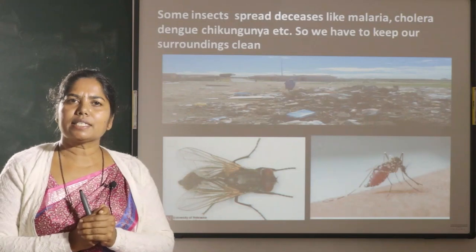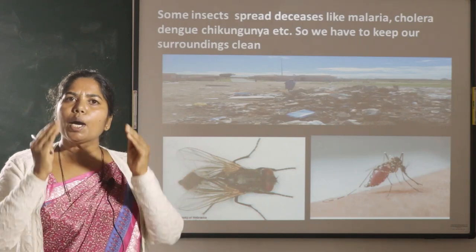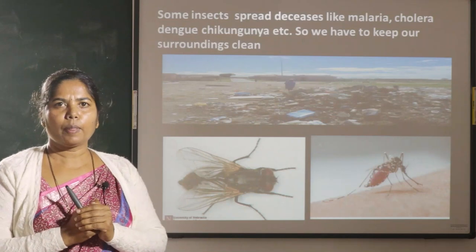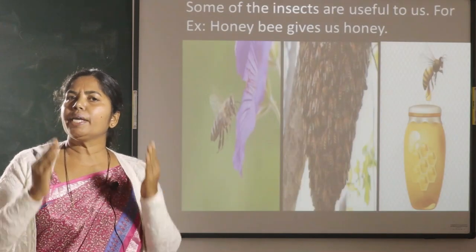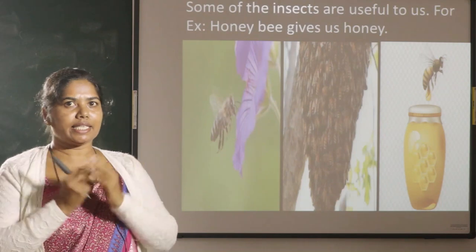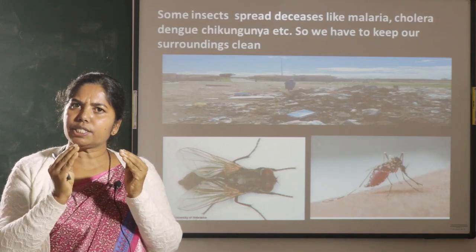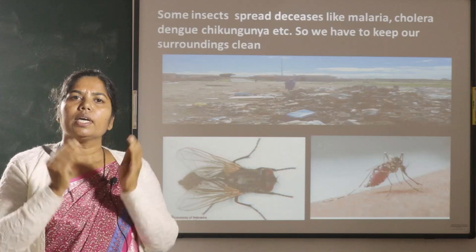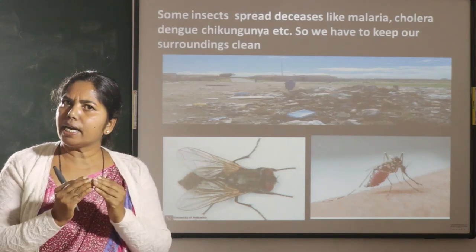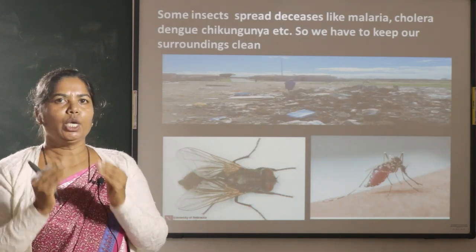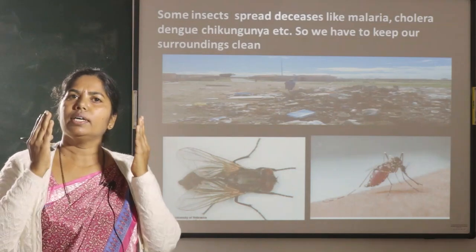Some insects are very, very dangerous. For example, house fly. House fly breeds in garbage. They spread disease like cholera. Mosquitoes are also very, very dangerous insects. They breed in stagnant water. They spread diseases like malaria, dengue and chikungunya. So we have to keep our surroundings clean to avoid these kinds of diseases.